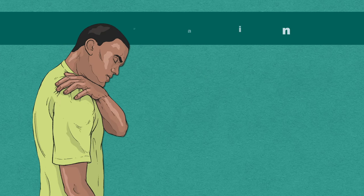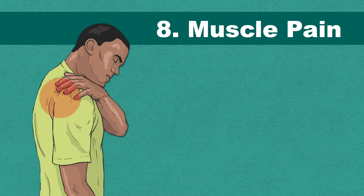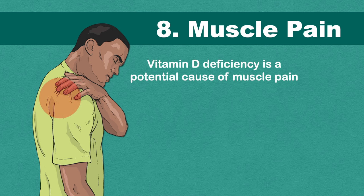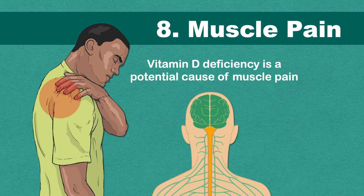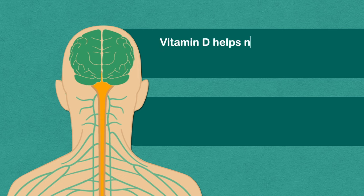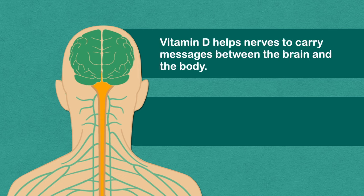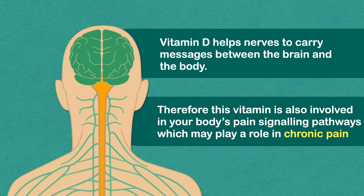The causes of muscle pain are often difficult to pinpoint but many studies have revealed that vitamin D deficiency is a potential cause of muscle pain. Vitamin D helps nerves to carry messages between the brain and body. Therefore this vitamin is also involved in your body's pain signaling pathways which may play an important role in chronic pain.